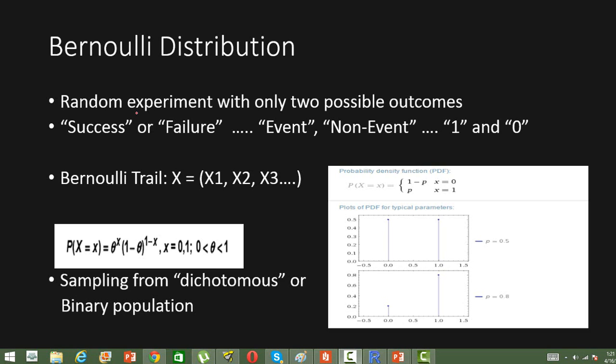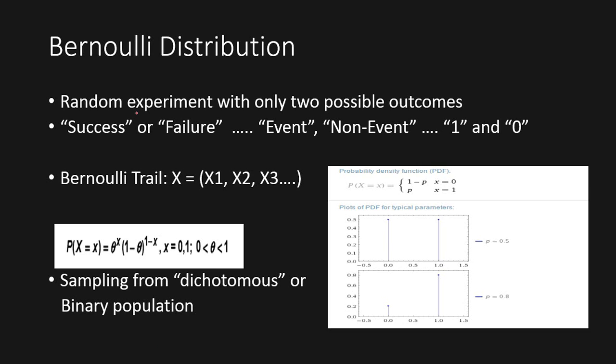Bernoulli distribution is a type of distribution in which the random experiment has only two possible outcomes. It deals with a kind of random experiments where we have only two outcomes.